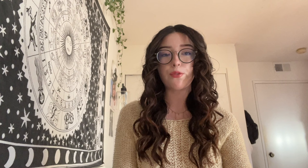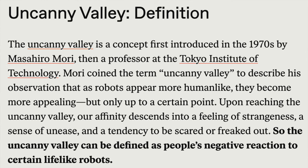The uncanny valley is a phenomenon defined as a theory in aesthetics suggesting that a humanoid object appearing almost but not exactly like a real human can evoke feelings of eeriness or revulsion rather than familiarity, due to the object's proximity to reality yet noticeable imperfections. The theory holds that humanoid entities closely resembling actual humans can evoke a strangely off-putting feeling in onlookers. In other words, the uncanny valley is when we view robots, puppets, mannequins, or other entities that attempt to mimic humans, but we can identify that something about their appearance is not quite right.